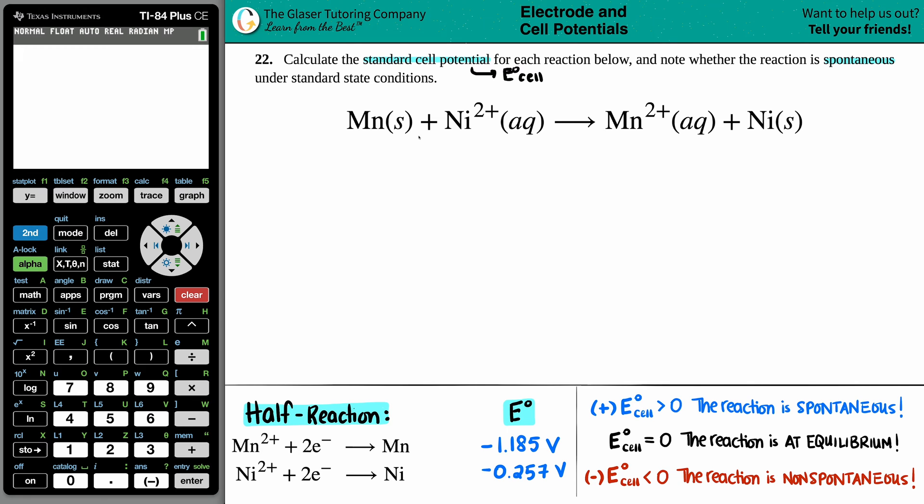Well it's this right here. E cell always equals the cell potential of a cathode minus the cell potential of an anode. More easily, you could just say cathode minus anode.